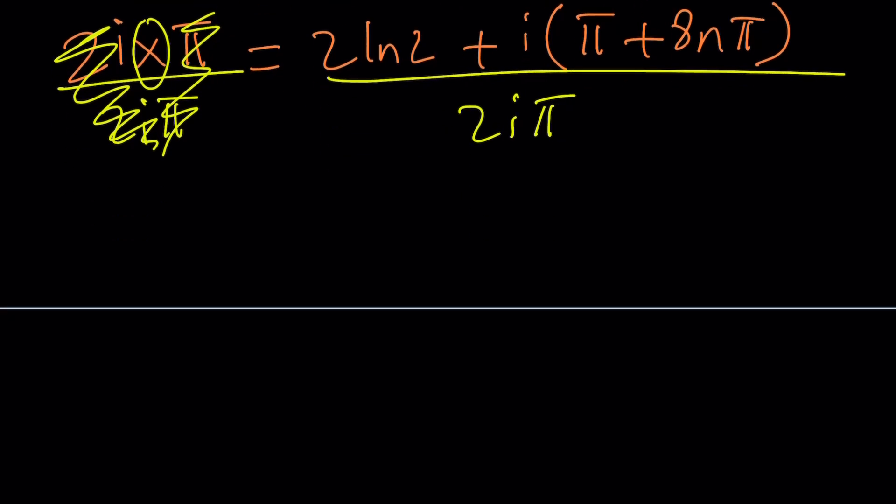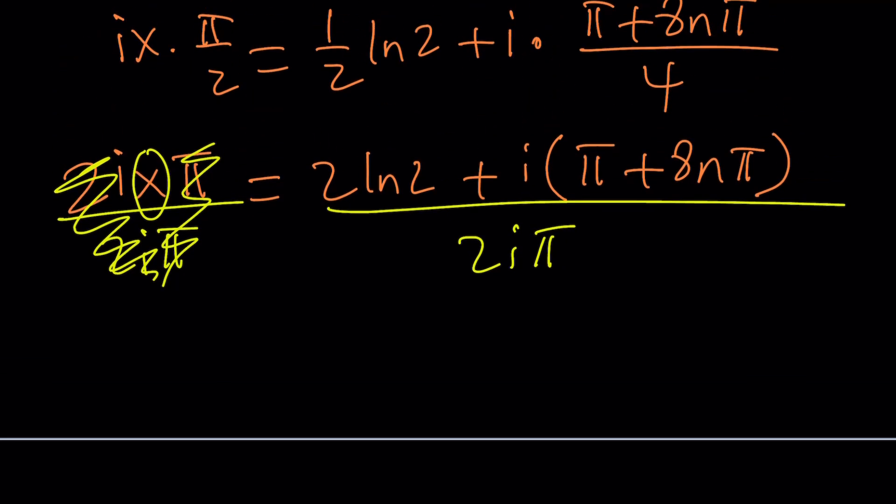So let's go ahead and simplify this a little bit. Another thing we can do here is to get rid of the i at the bottom because you don't want to have that. Let's go ahead and multiply the top and the bottom by negative i. And that's going to give us i times negative i, which is negative i squared, and that is equal to 1.